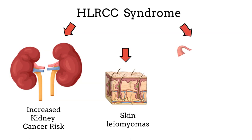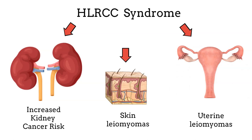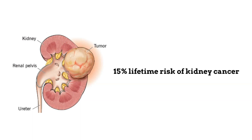HLRCC is also associated with the development of benign skin leiomyomas and uterine leiomyomas, also known as uterine fibroids. The most feared complication of HLRCC is kidney cancer, which can occur in approximately 15% of patients.